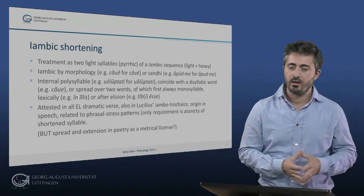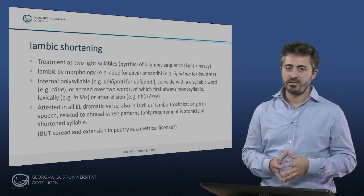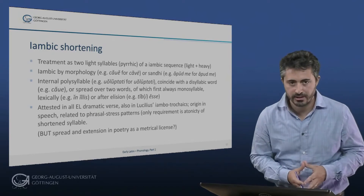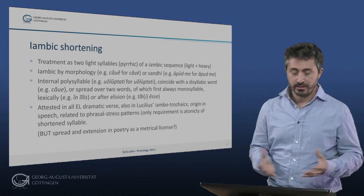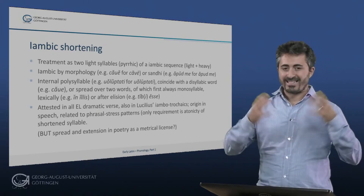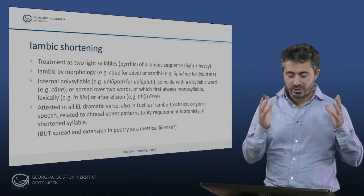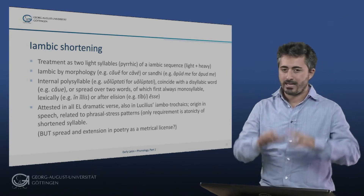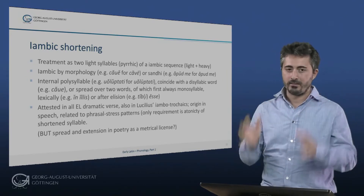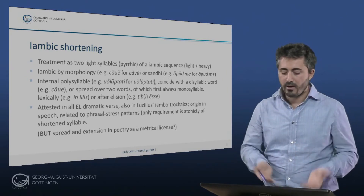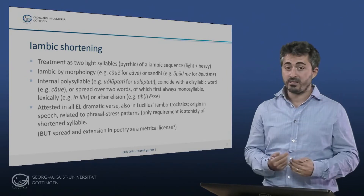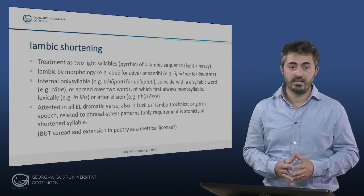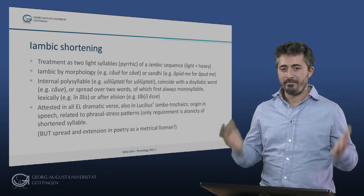known as iambic shortening. Iambic shortening is the treatment of as two light syllables, as a pyrrhic sequence, of a prosodic sequence that should be normally treated as an iambic sequence.